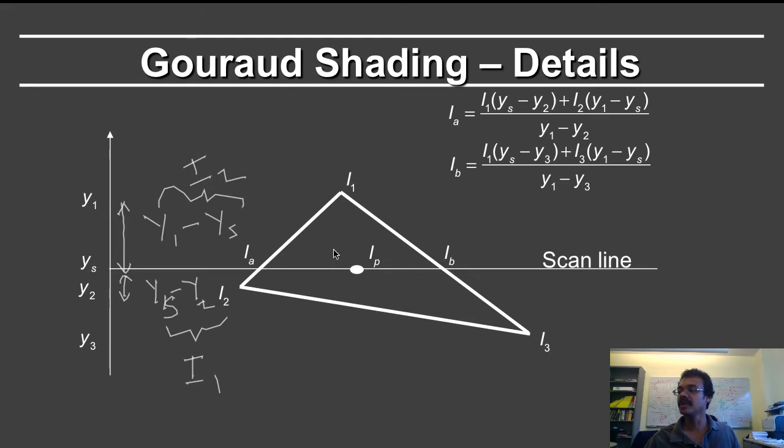Once you have the formula for iA and iB, the question is, what do you get for iP? And in order to consider that, one needs to consider the x-coordinates, because one is interpolating within a scanline. So we can consider this as being the x of A, and we can consider this as being x of B. Here of course you have x of P. So the interpolation idea is the same.